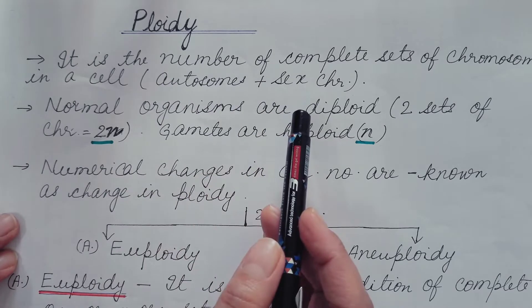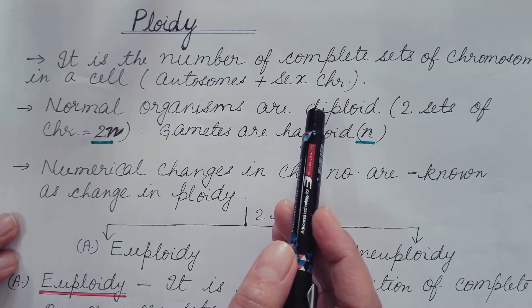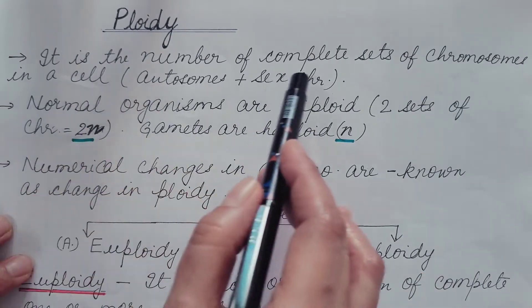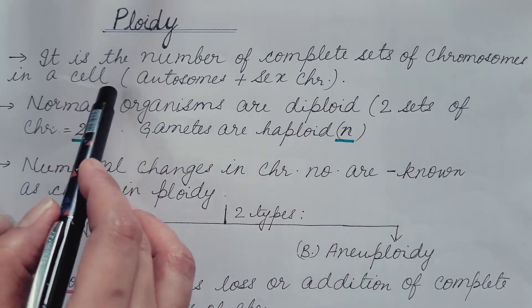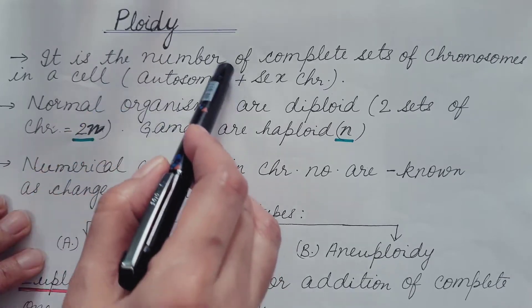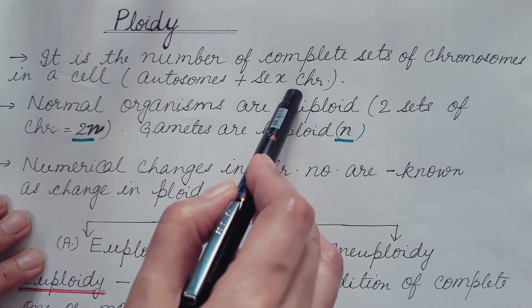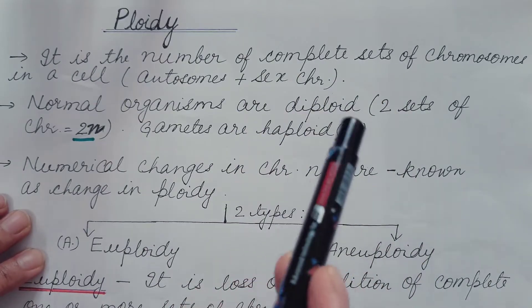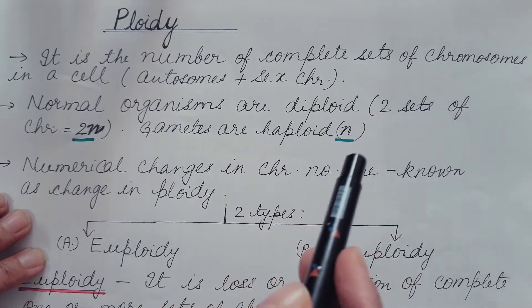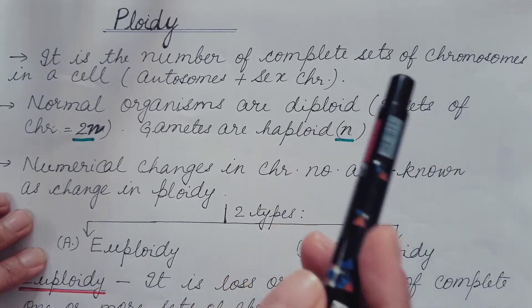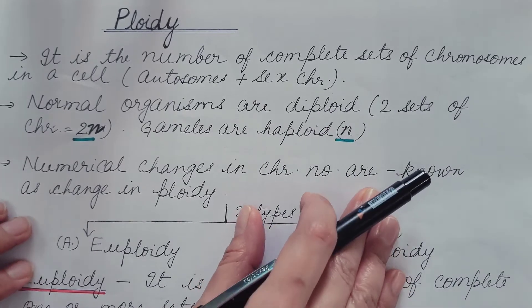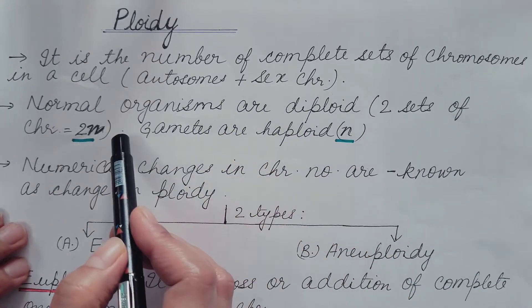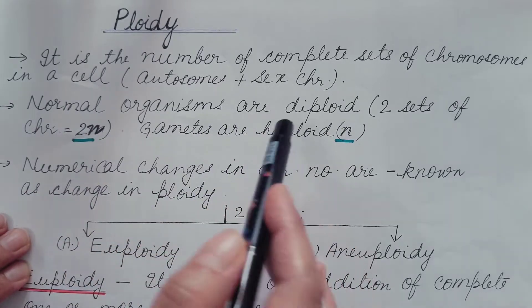Hello friends, today we are going to discuss ploidy and what happens when there is a change in ploidy. Ploidy is the number of complete sets of chromosomes in a cell, which includes both autosomes and sex chromosomes. In a cell, there is cytoplasm and a nucleus, and chromosomes are present in the nucleus. Chromosomes consist of both maternal and paternal copies, and are present in homologous pairs. Normal organisms, either plants or animals,